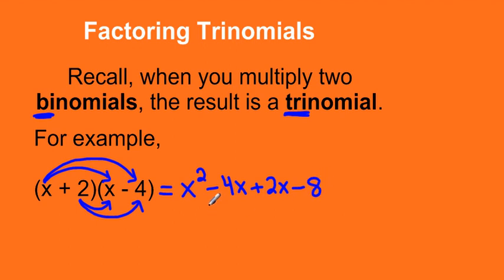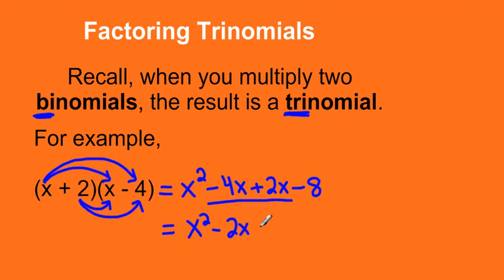The I in FOIL stands for inside, so we're going to be looking at 2 times x. And the L in FOIL stands for last, so we'll be looking at 2 times negative 4, which is negative 8. Now we always want to collect like terms and simplify. Negative 4x plus 2x is like negative 4 oranges plus 2 oranges — that gives us negative 2x, and minus 8. So here I've multiplied two binomials together, and the result is a trinomial with three terms.